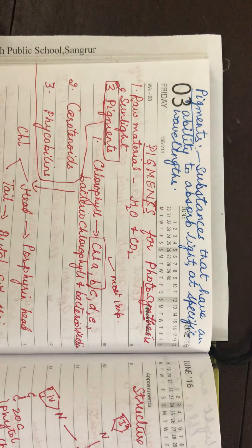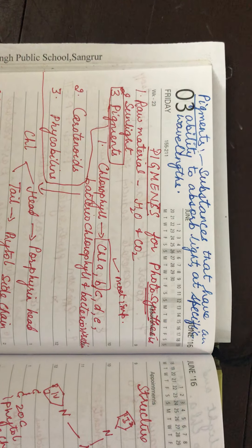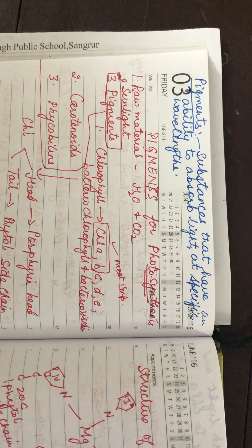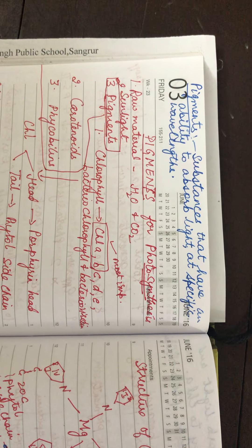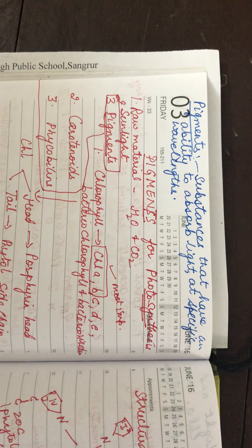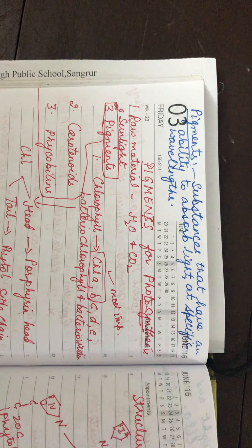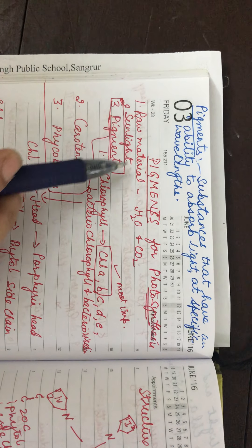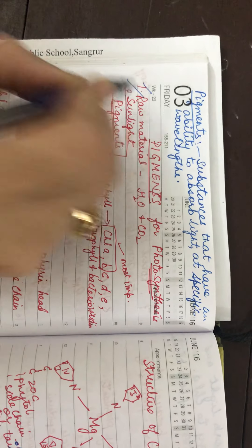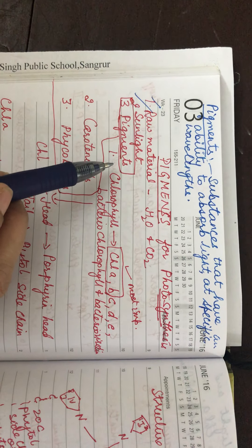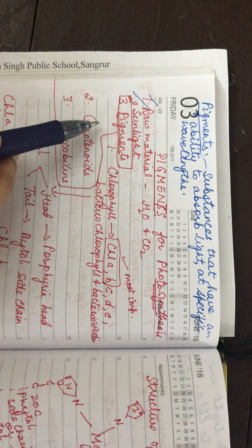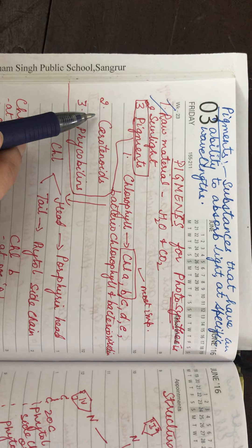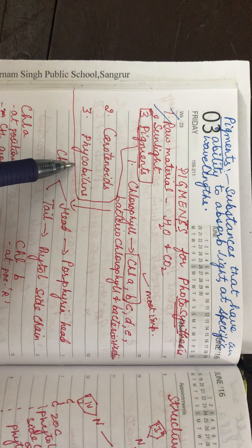Now let us do the pigments for photosynthesis. First, you should know what pigments are. Pigments are substances that have the ability to absorb light at specific wavelengths. So specific wavelengths are absorbed by specific pigment molecules. The raw materials are water, carbon dioxide, and sunlight from outside; these pigments are present in the plants themselves. There are three types: one is chlorophyll, number two is carotenoids, and number three is phycobilins.